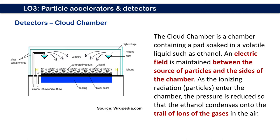For cloud chamber, the pressure is reduced as the ionizing radiation or particles enter the chamber in order to create condensed ethanol which then turns into trails of ions in the air that show the track of the particle. Electric field is maintained between the source of the particles and the side of the chamber in order to deflect particles of different charge.